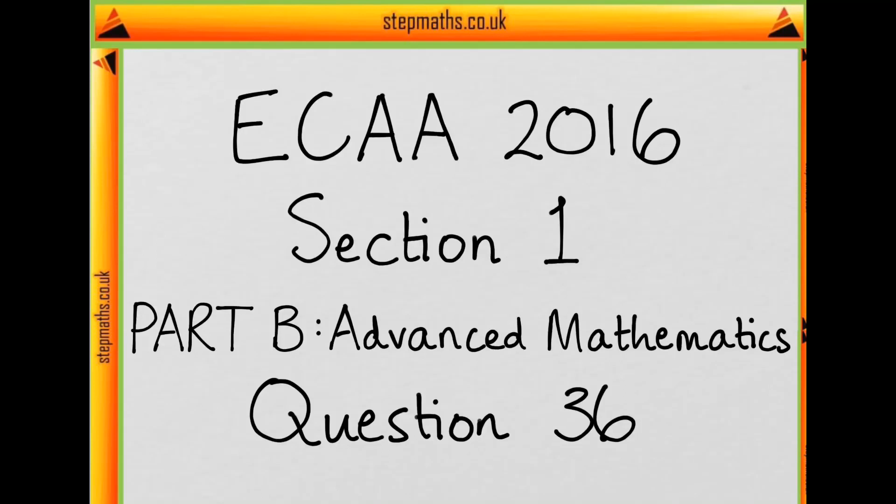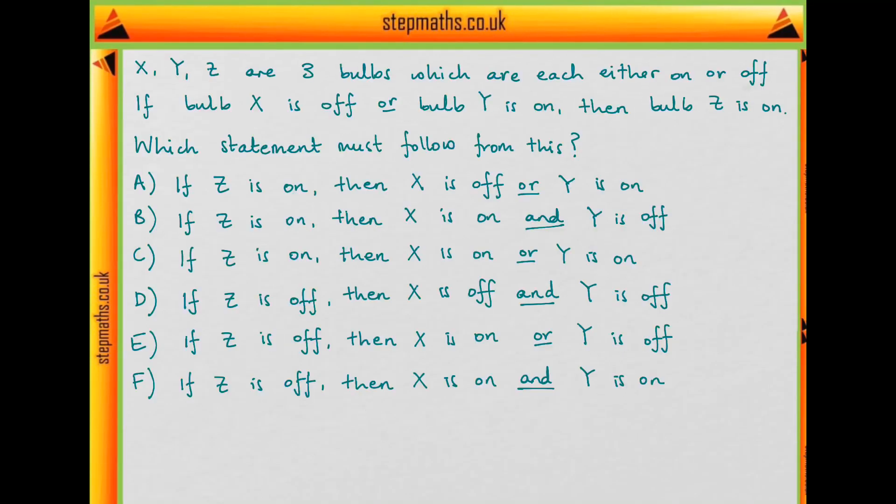Hi, this is question 36 on ECA 2016. We have three bulbs, X, Y, and Z, which can either be on or off. We're given a statement about these bulbs, and we want to know which of these statements must follow from this one.